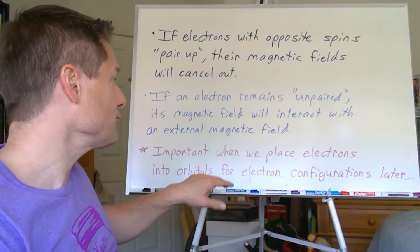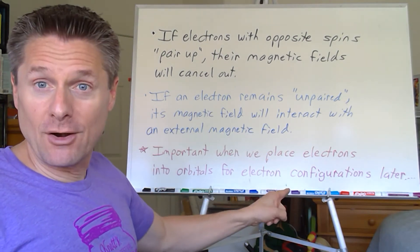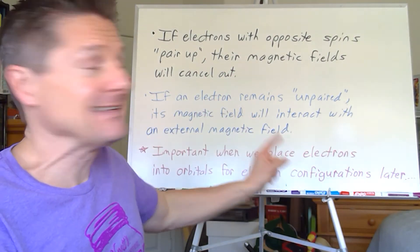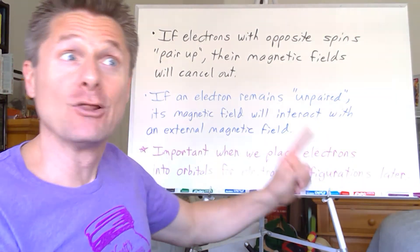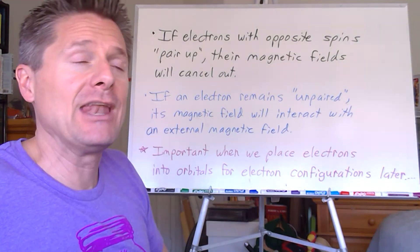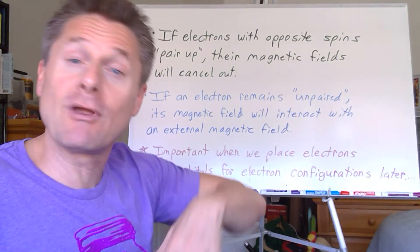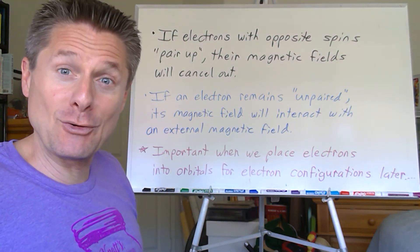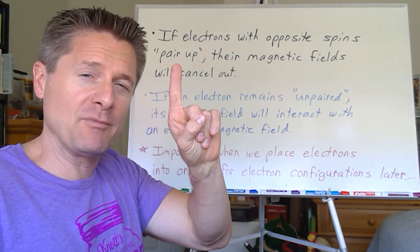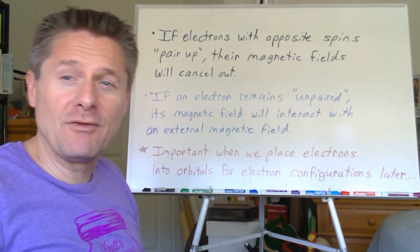The net result is we need to know this when we get to electron configurations — looking at how many electrons an atom has, what orbitals they go into, and whether electrons get paired or remain unpaired. This has a huge impact on the chemistry and magnetic behavior of an atom. To summarize: m sub s is the electron spin quantum number — m sub s equals positive one-half for spin up, or m sub s equals negative one-half for spin down. Go review your right-hand rule!